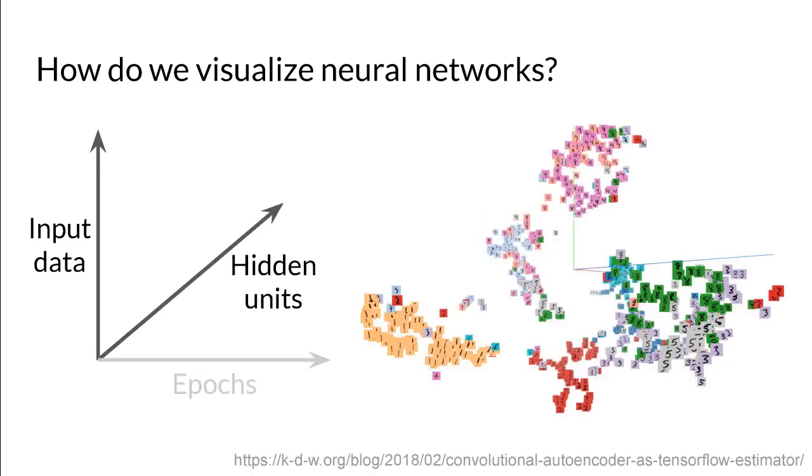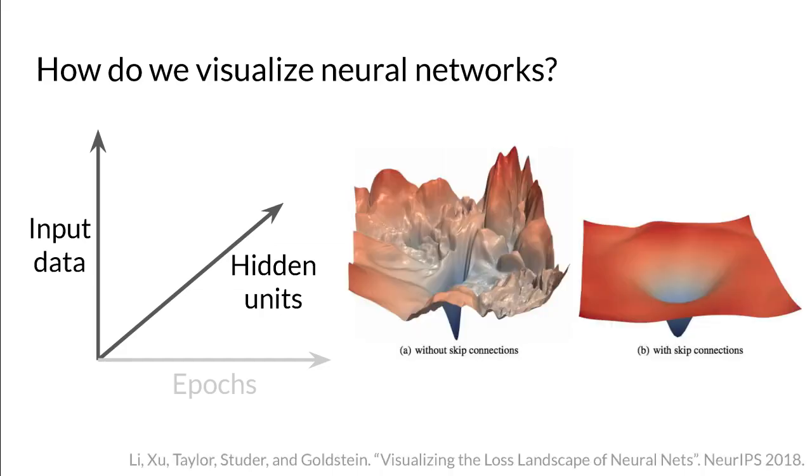An alternative would be to visualize the hidden representations of the input data, which gives a static view of the network state, but does not tell us about learning. Other work has been done to visualize the loss landscape of a network, but again, this is a static picture of the network that does not tell us about the training process itself.